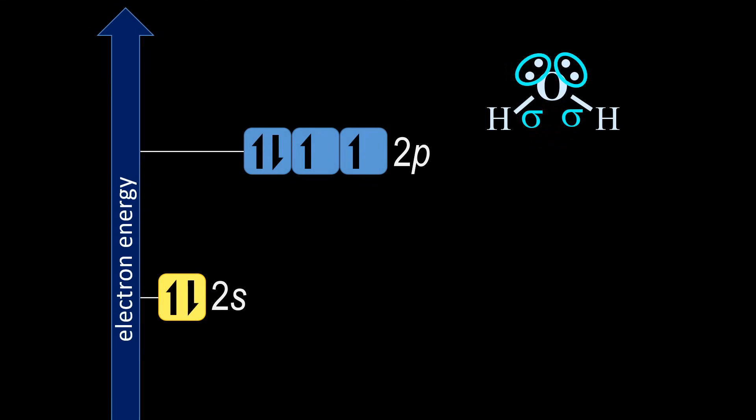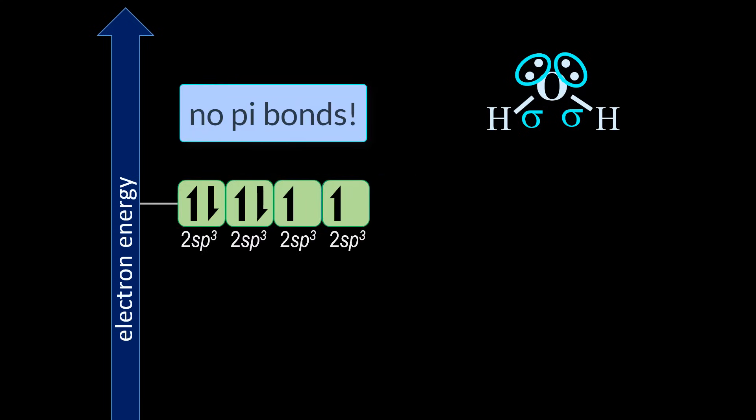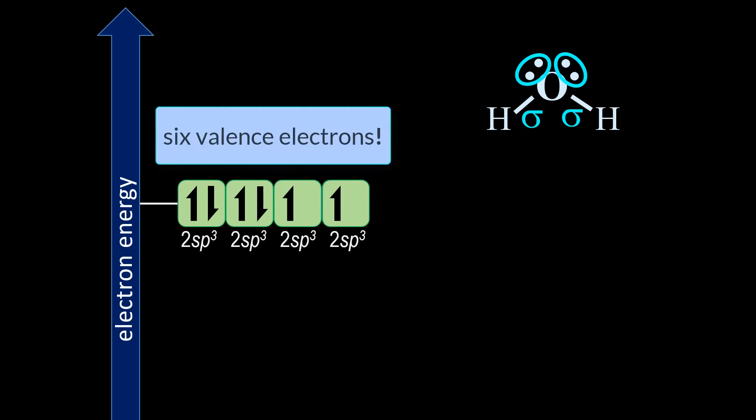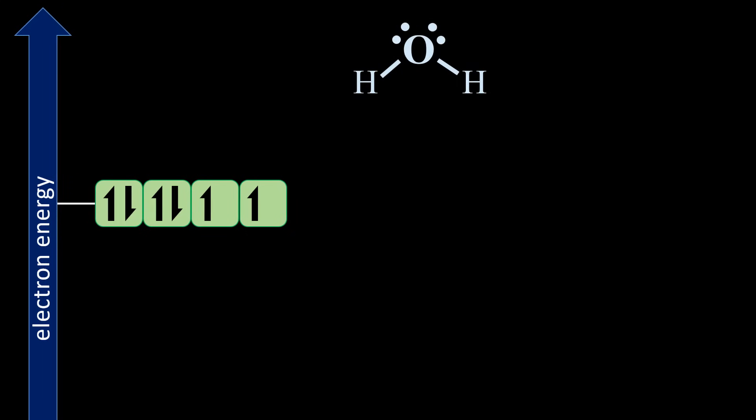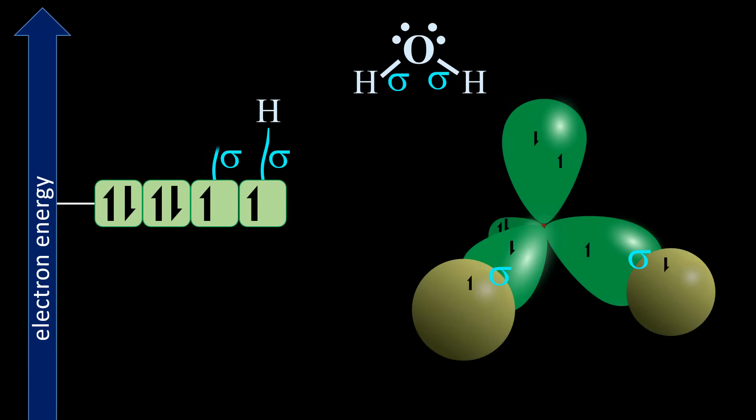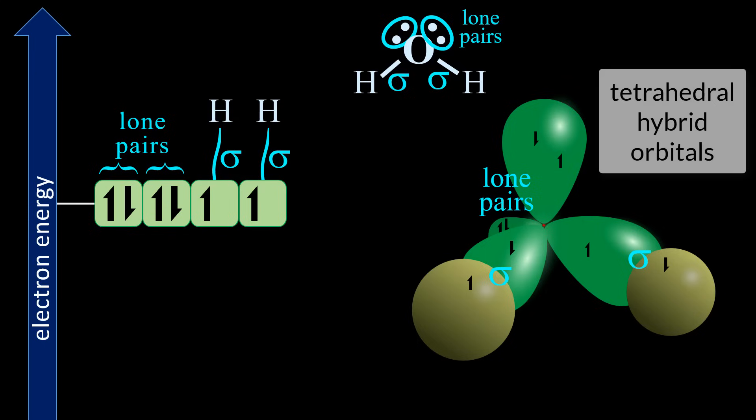And lastly, water. Here, oxygen has two sigma bonds and two lone pairs. In water, oxygen is also 2sp3 hybridized, but with six valence electrons. Two of the sp3 orbitals have paired electrons. You can probably guess that the sp3 orbitals with a single electron will overlap with hydrogen, and the remaining two pairs are unbonded. They are lone pairs. Again, oxygen's hybrid orbitals spread out in a tetrahedral shape.